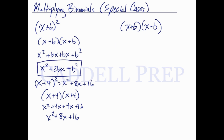Now let's see what happens if we have x plus b times x minus b — so x plus some number times x minus that same number. Let's multiply this out. x times x is x squared, x times negative b is negative bx, positive b times x is positive bx, and positive b times negative b is negative b squared.